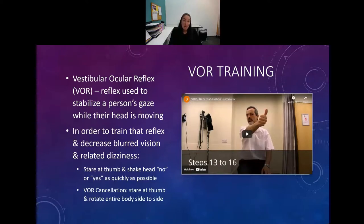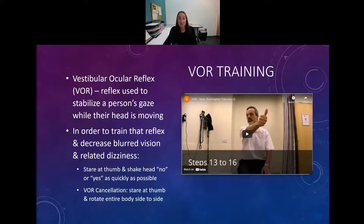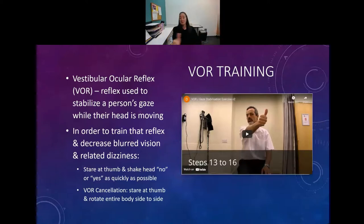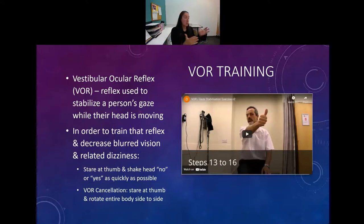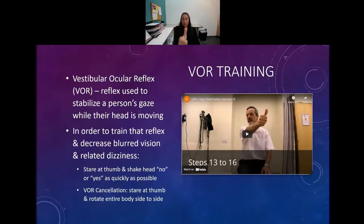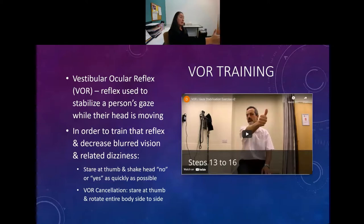VOR cancellation is when you are able to move with an object and keep your focus on that object without it becoming blurry. Ideally, have them sit in an office chair, hold their thumb out, stare at it, and their whole body moves as a unit - ideally on a rotating surface going back and forth as quickly as they can without the thumb becoming blurred. This works on allowing them to keep their eyes fixed in the center of their eye sockets as their head moves - with VOR cancellation, everything moves as a fixed unit together.